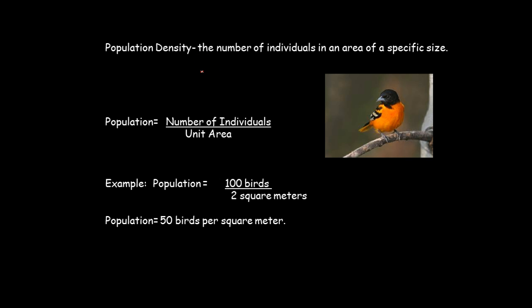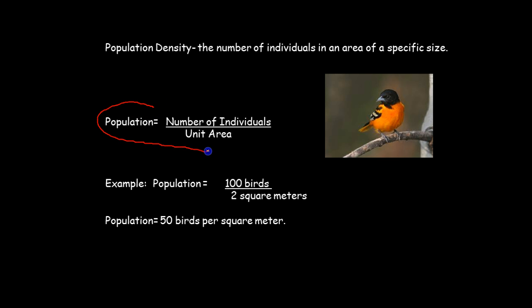A formula you need to memorize is called population density. You did something very similar to this in the turtle lab. Population density is the number of individuals in an area of a specific size — how many organisms roughly are there per that unit size. The formula is: population density equals the number of individuals divided by the unit area. Ecologists use this quite often.